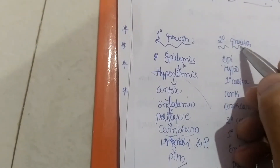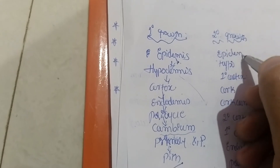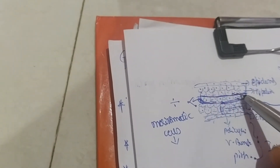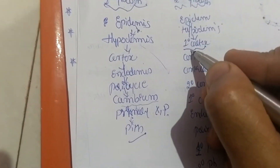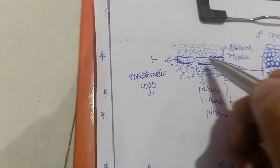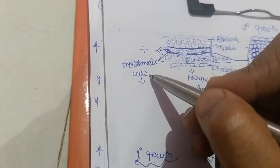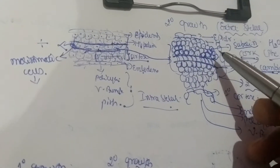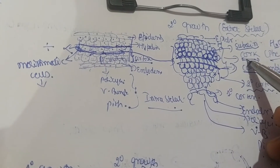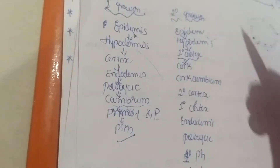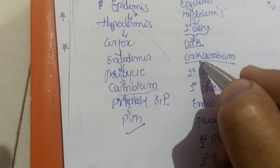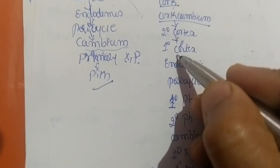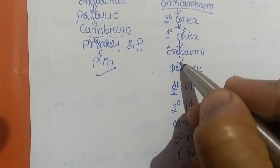In secondary growth, the arrangement becomes: epidermis, hypodermis, then inner to hypodermis is primary cortex. Inside primary cortex is the de-differentiated layer which forms meristematic cells, which form cork cambium. Cork cambium outwardly forms cork, and inwardly forms secondary cortex. So the order is: cork, cork cambium, secondary cortex, primary cortex, endodermis, pericycle. We have seen secondary growth in the intrastele region, so inner to pericycle: primary phloem, secondary phloem, cambium, secondary xylem, primary xylem, and pith.